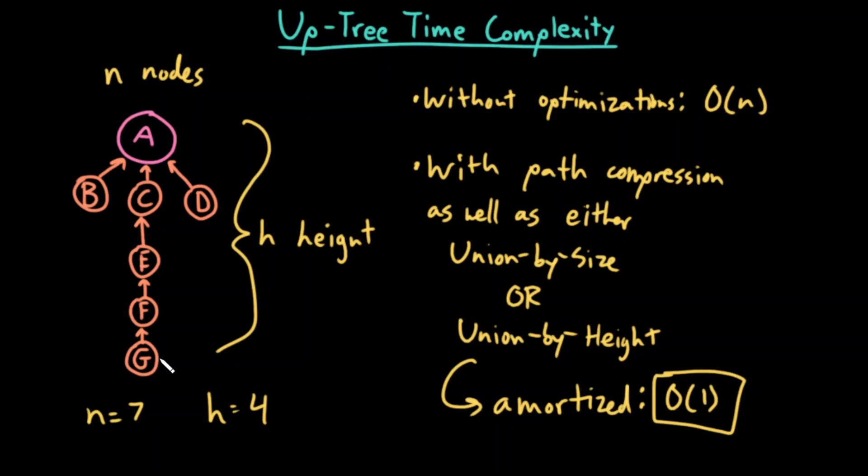But what would happen is after that first potentially slow traversal, all subsequent traversals will be extremely fast. So if we amortize the time complexity over many many find operations, we'll have one initial super slow find operation followed by a bunch of super fast find operations. Actually all of those subsequent find operations would be constant time. So in the worst case amortized if we did path compression and one of these two we would get amortized constant time complexity.